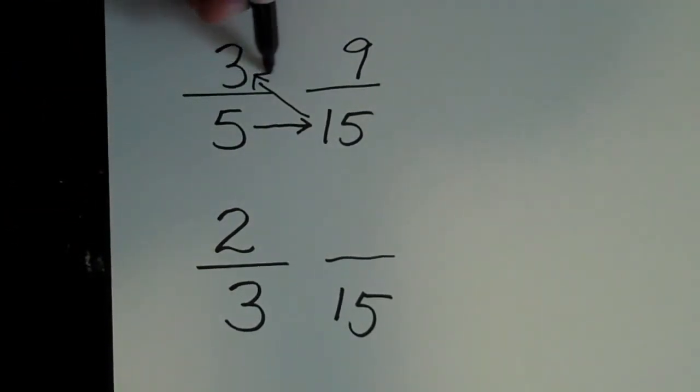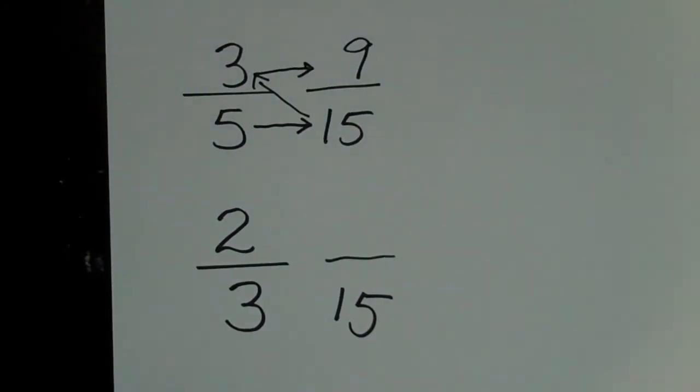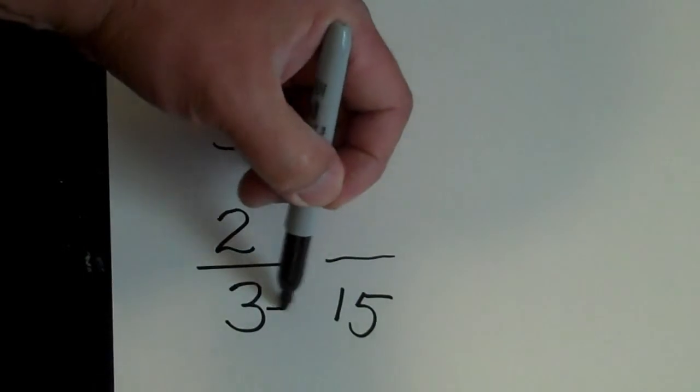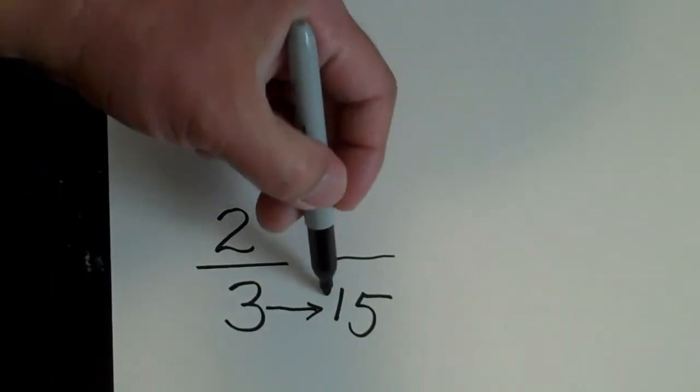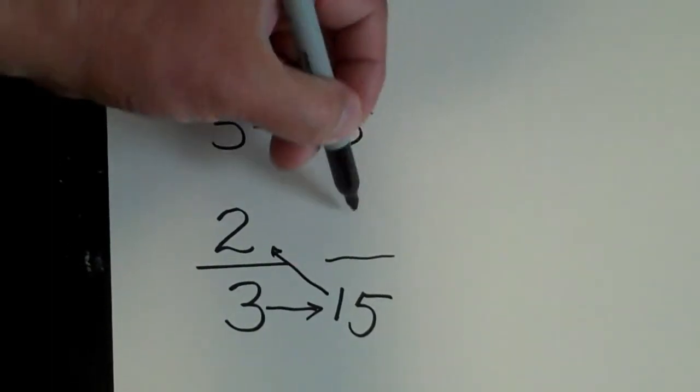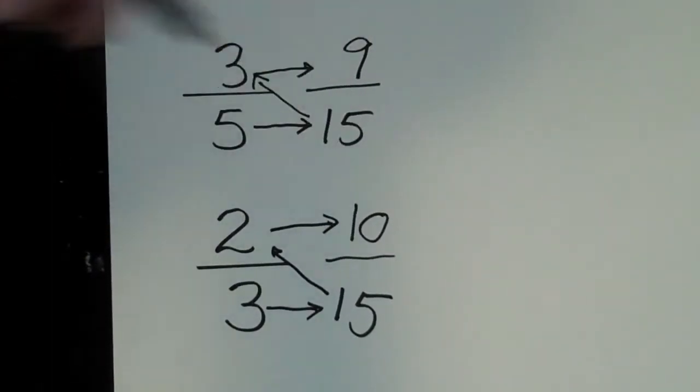And that's why I call it the EZZ, because it kind of looks like a Z. And then I would do the same thing at the bottom. I would divide 3 into 15, which is 5. And 5 times 2 is 10.